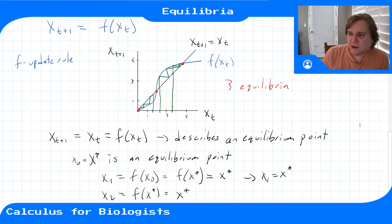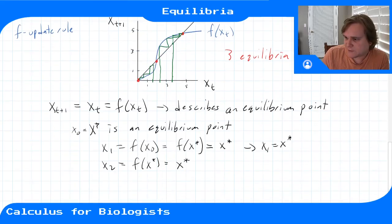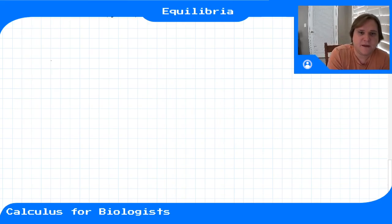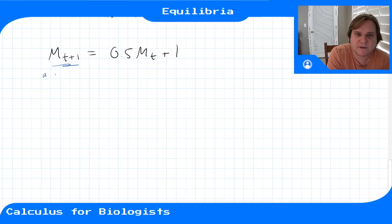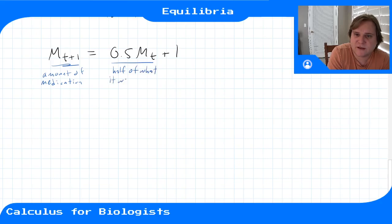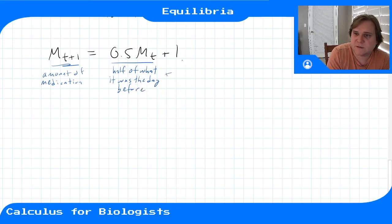Now that we have the algebra, we can find equilibrium points for any dynamical system. Let's look at the medication example: the discrete time dynamical system m(t+1) = 0.5·m(t) + 1. This says every day the amount of medication in our body is half of what it was the day before — because our body absorbed some of it — plus our new daily dose.